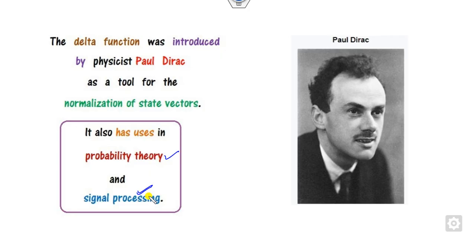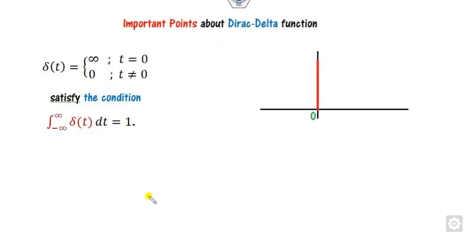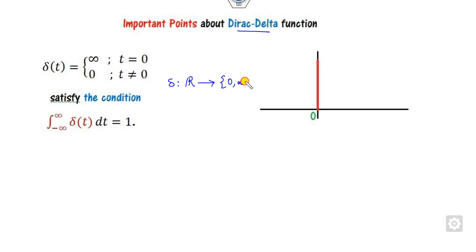This is the function defined by Dirac and it is widely used in probability theory as well as signal processing. So if you are a student of electrical engineering or instrumentation, you are well acquainted with the Dirac delta function's applications. Regarding important points: this function maps from the real line and its value is either 0 or infinity.